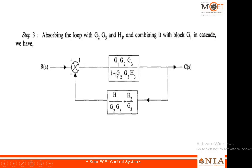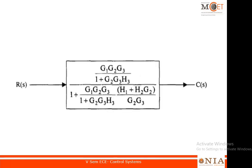All the steps have been performed. This has become a single forward block and those two parallel feedbacks have been added into one, so it becomes a single loop. You can reduce it to a single block: whatever is in the forward path divided by 1 plus the feedback function. Once you do that you get the single block and that is the transfer function. C(s)/R(s) equals this function, which you can simplify further into a single numerator and denominator.